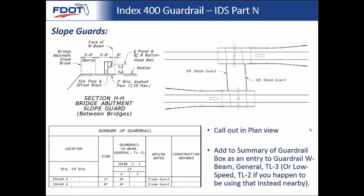If your project has some other type of visual physical barrier — such as a concrete wall — that would serve as an indication to maintenance crews of a drop-off and prevent them from accidentally running off the slope break, then the guardrail slope guard would not be required. That would be acceptable with engineering judgment as a substitute for the guardrail slope guard.